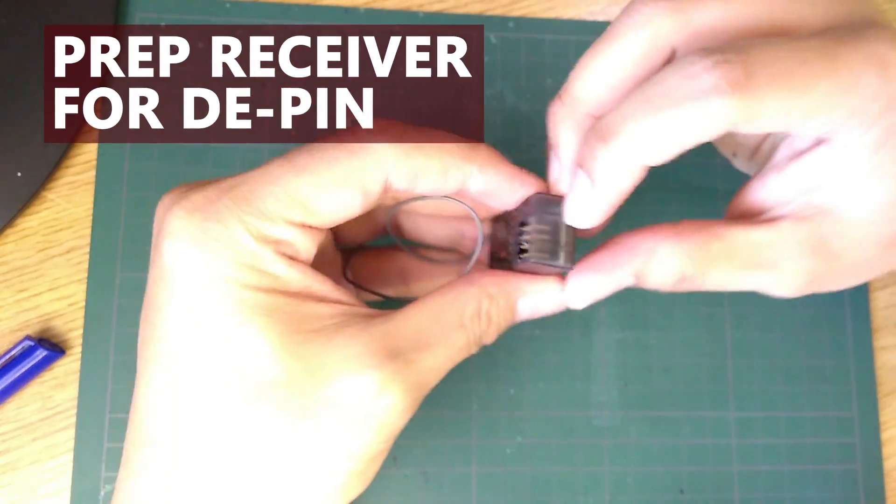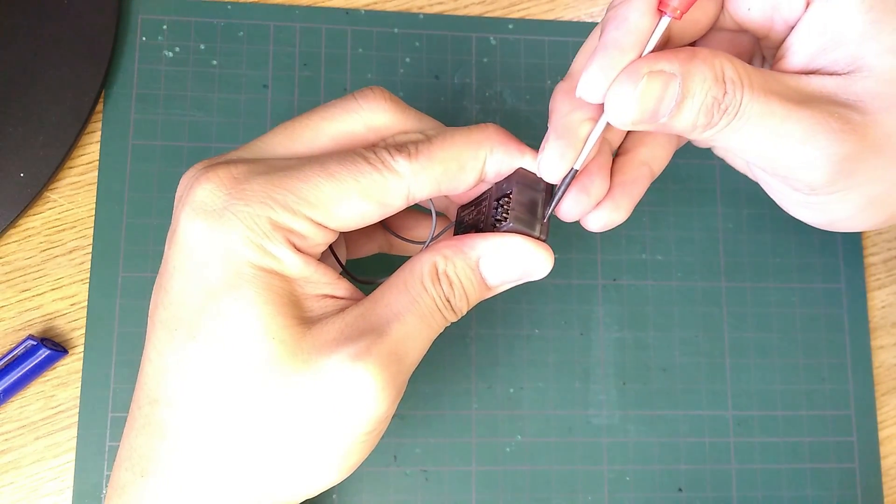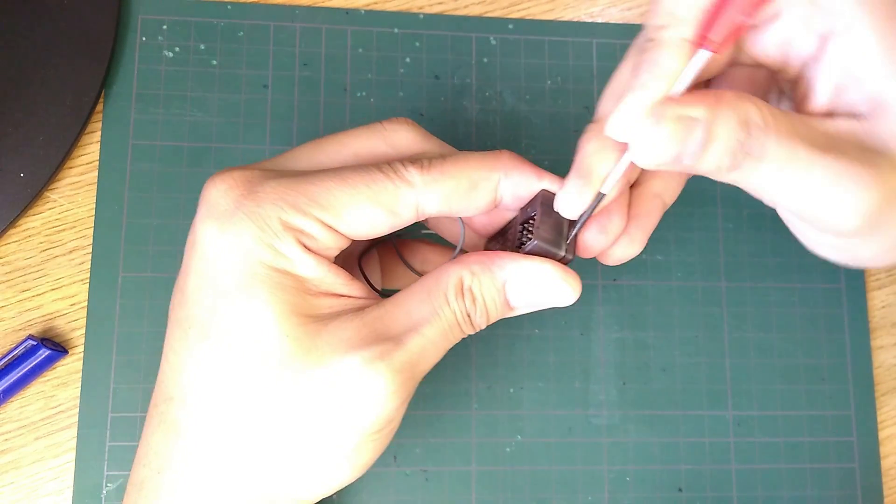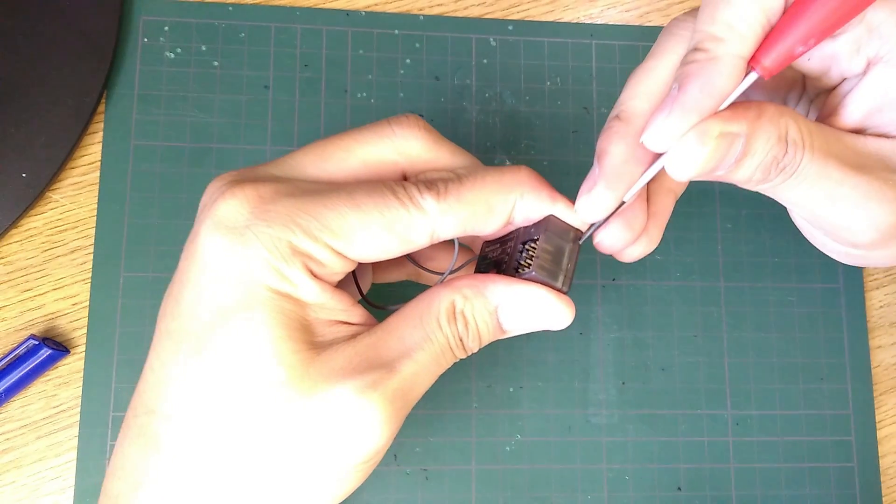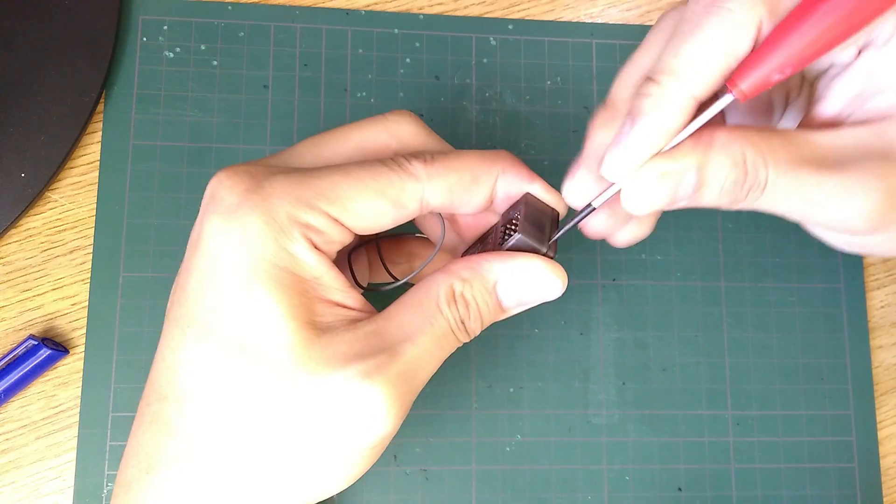Let's start with the receiver. To make it as small as possible, I'll desolder all the pins out. I have seen people just cut the pins and solder the wires to them but I'm not going to do that because I want it to be as flat as possible otherwise it won't fit.